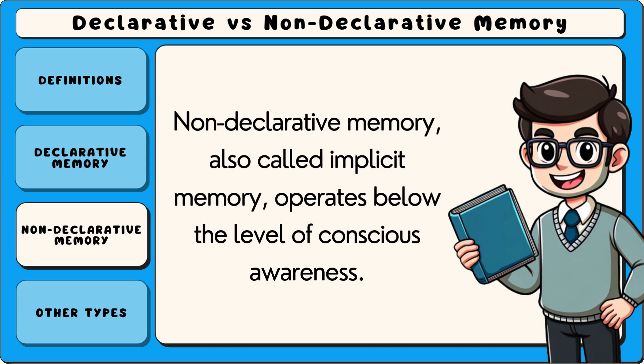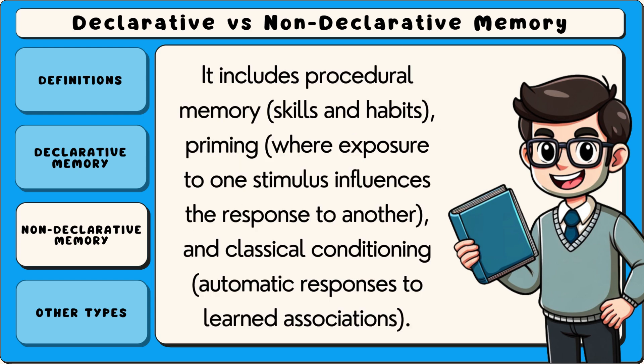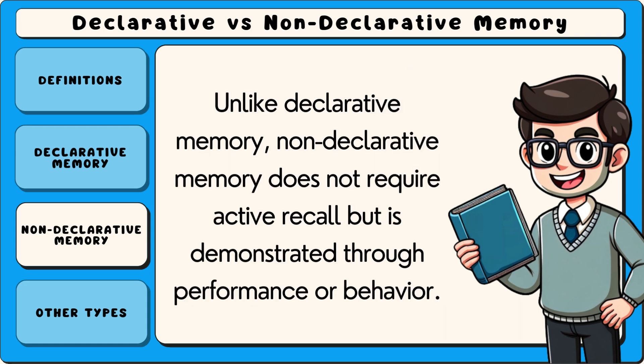Non-declarative memory, also called implicit memory, operates below the level of conscious awareness. It includes procedural memory, skills and habits; priming, where exposure to one stimulus influences the response to another; and classical conditioning, which involves automatic responses to learned associations. Unlike declarative memory, non-declarative memory does not require active recall but is demonstrated through performance or behaviour.